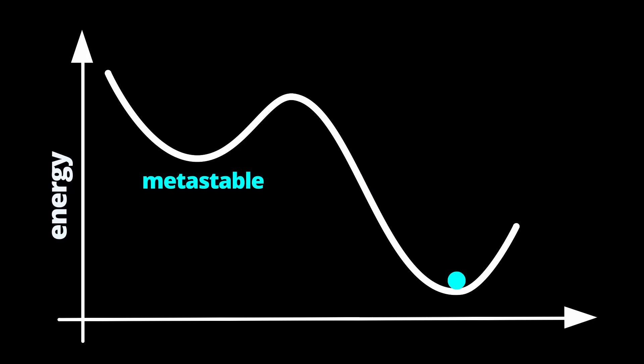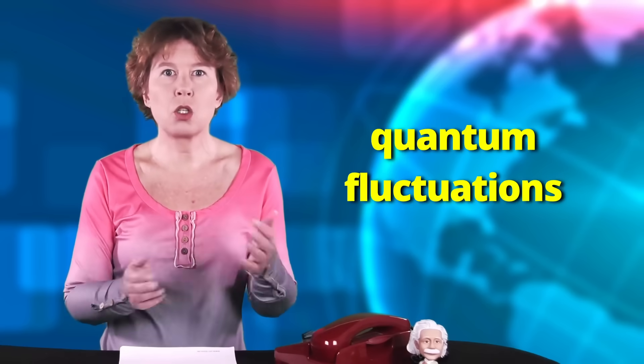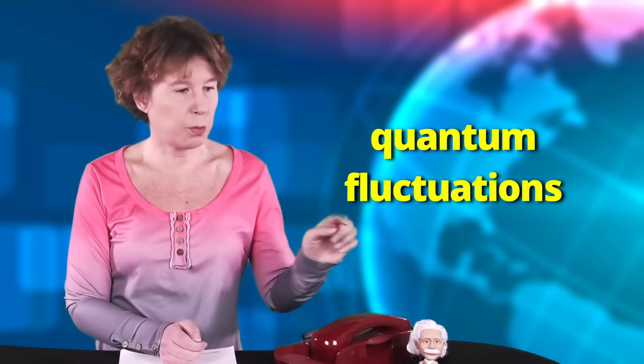Normally, such phase transitions are caused by external forces. But theoretically, they can also happen by quantum fluctuations, in which case the system tunnels from the metastable to the stable state. These quantum fluctuations need no external cause. They just happen all by themselves. It's God rolling dice, as Einstein put it.